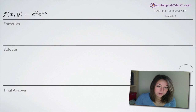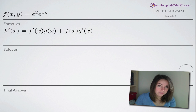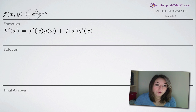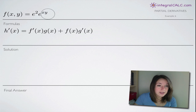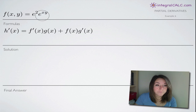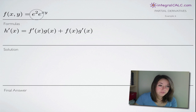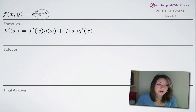With this problem, a couple things. The first thing we're going to notice is that we have two quantities that are multiplied together: e squared is one and e to the xy is another. We're going to use product rule because we're taking derivatives of this function and we have two things multiplied together.